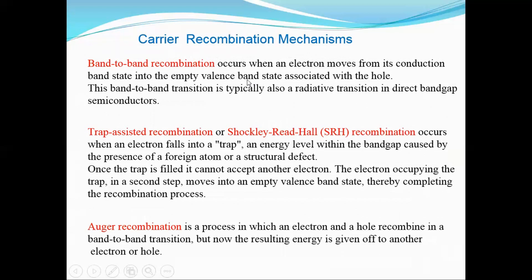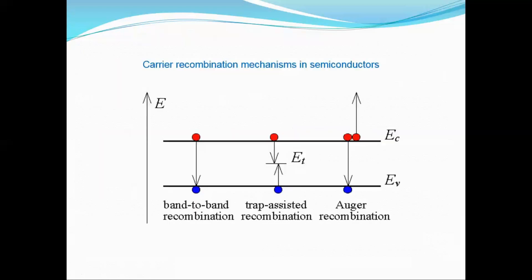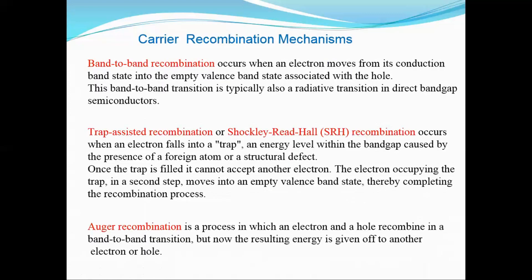Moving to Carrier Recombination Mechanisms, there are three methods. The first is band-to-band recombination, where the electron moves from the conduction band to the valence band and recombines with a hole. This band-to-band transition is a radiative transition occurring in direct band gap semiconductors. As seen in the diagram, an electron from the conduction band falls into the hole in the valence band, and in this process the energy released by the electron is equivalent to the band gap energy.